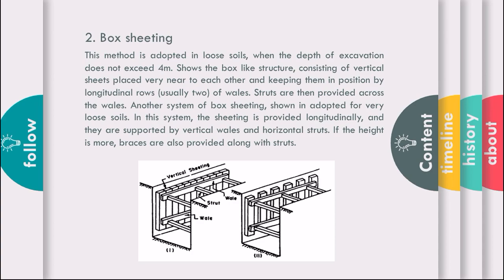As you can see in the figure, the structure contains vertical sheeting with wales and struts. If the soil is very loose, then vertical sheets are set with shorter distance. If the soil is not that loose, then you can increase the space between two vertical sheets.